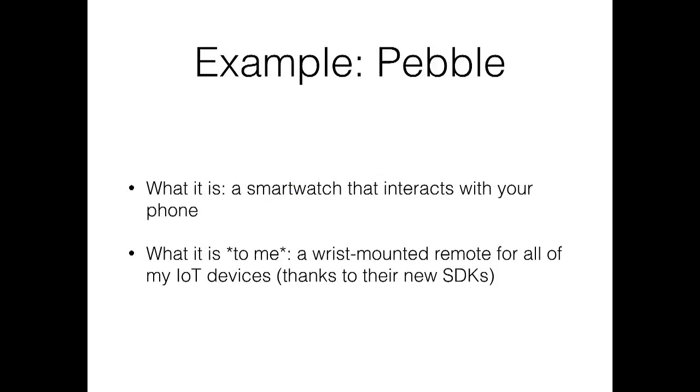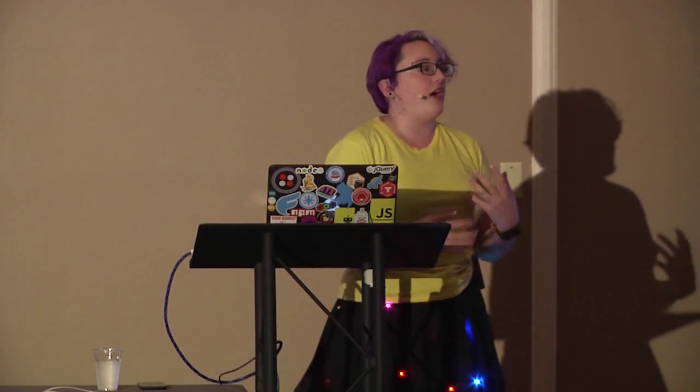Another example is the Pebble you got in your goodie bag. It's a smartwatch that interacts with your phone, but because it has an SDK in C and an SDK in JavaScript, you now have a wrist-mounted remote for all of your IoT devices. You have that extra output — you can see what's going on on the Pebble screen, write applications in those languages to interact with robotics. And there are four different buttons on it, so if you want a simple robot to go back, forth, and turn, you can make that interaction work for you.